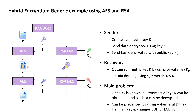Bob then takes the public key of Alice and with this public key encrypts the newly and randomly generated AES key with RSA, which results in an encrypted key K.